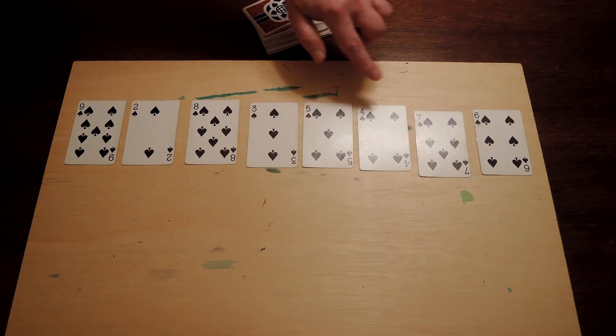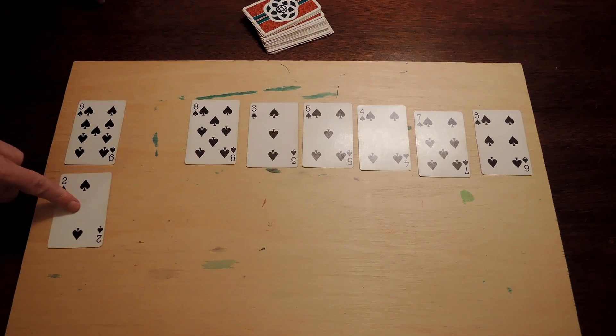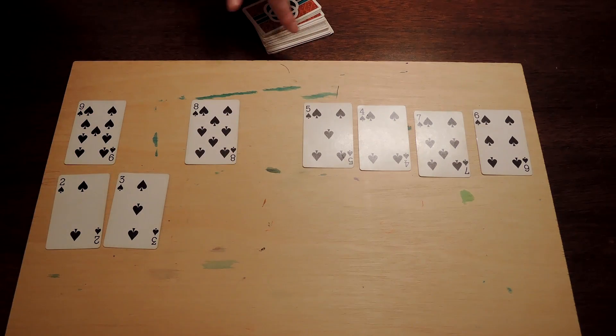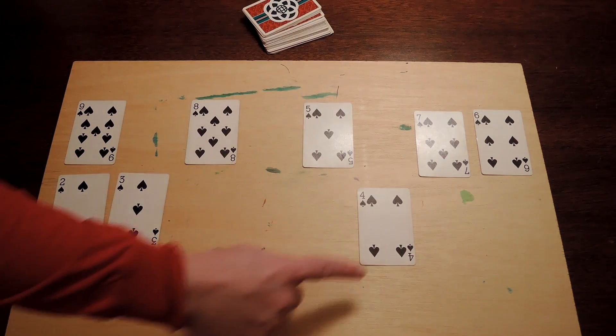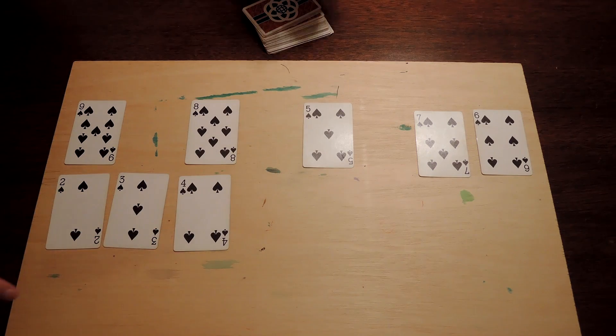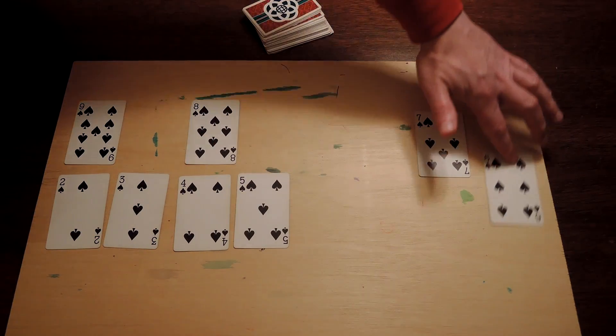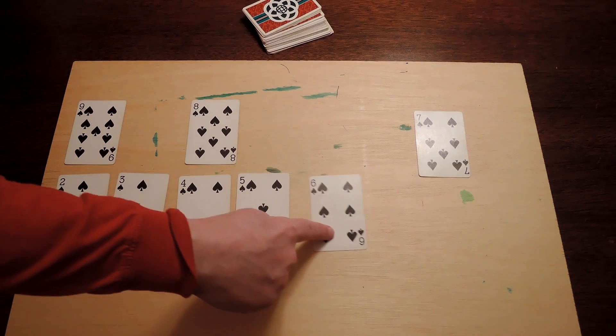One way to order the cards is to find the lowest card and move it to the left end and then find the lowest card out of the rest and move it to the second to the left position and then find the lowest card out of the rest and move it to the third position and so on. Now, is that what you did?